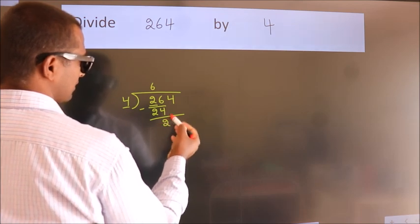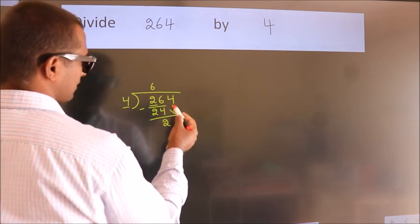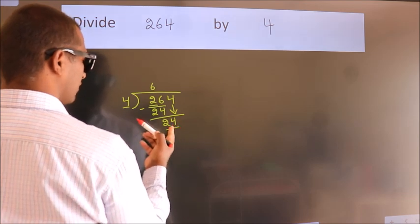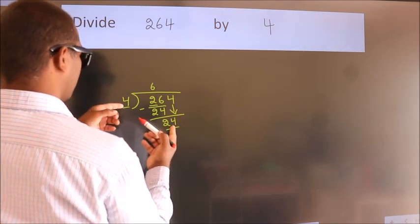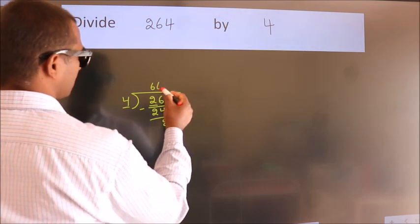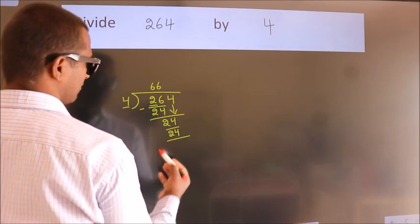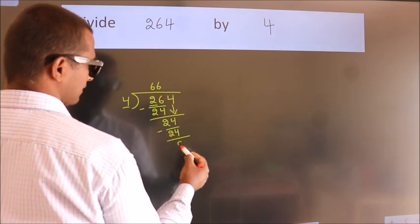After this, bring down the beside number, so 4 down. So 24. When do we get 24? In the 4 table, 4 times 6 equals 24. Now we subtract. We get 0.